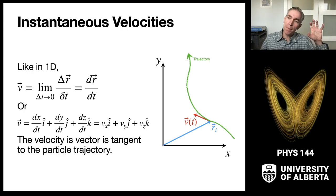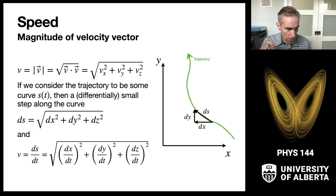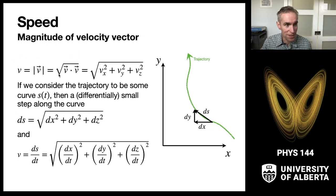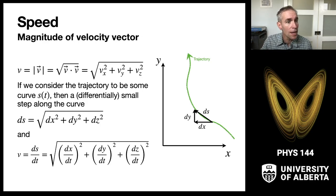Now we combine everything we learned about vectors with everything we learned about kinematics to define speed. Speed for a particle in three dimensions is just the magnitude of the velocity vector. We can consider it as the square root of the velocity vector dotted with itself, or equivalently the square root of vx² + vy² + vz². That's like the Pythagorean theorem in three dimensions.